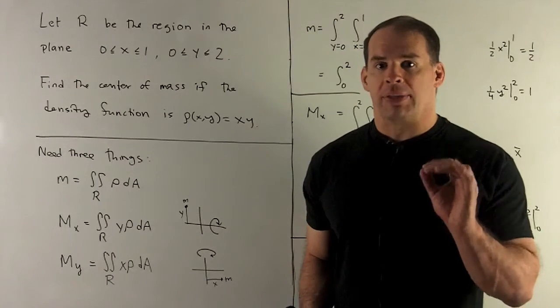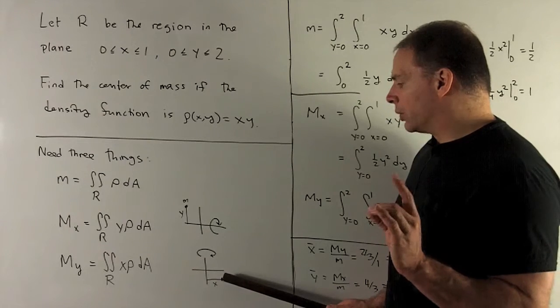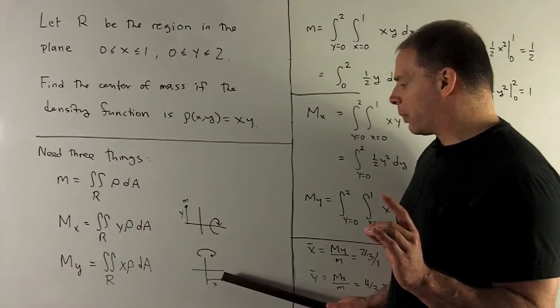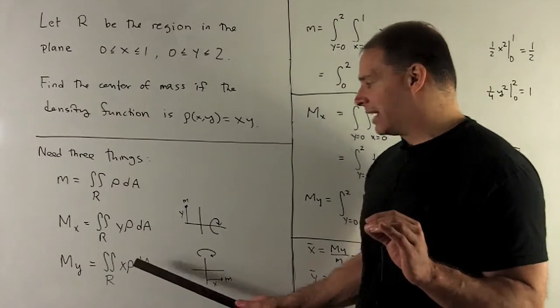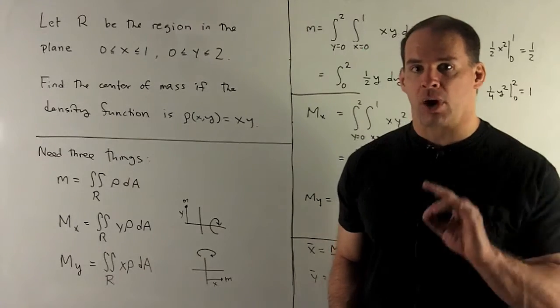Similarly, the moment about the y-axis, we take our point. Same idea. We're going to take distance along x times the mass of our point. In this case, density is going to be our substitute times x, integrate over our region.